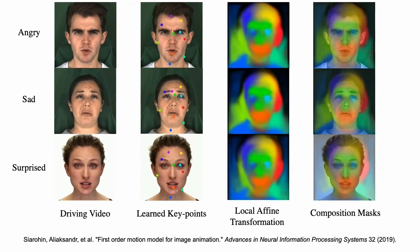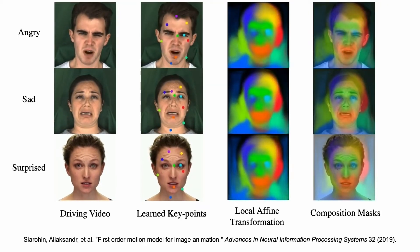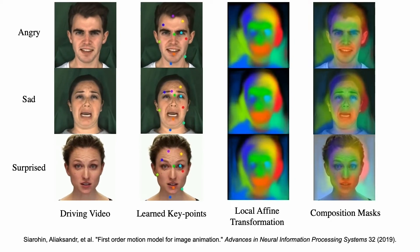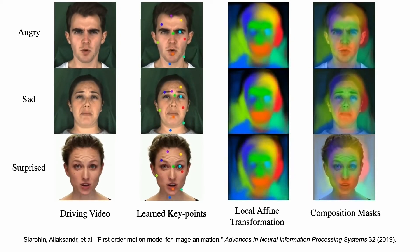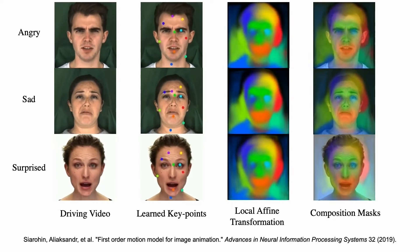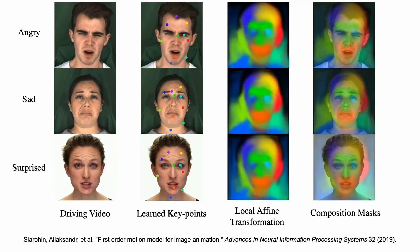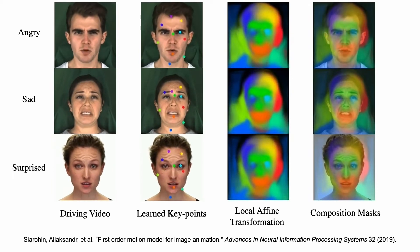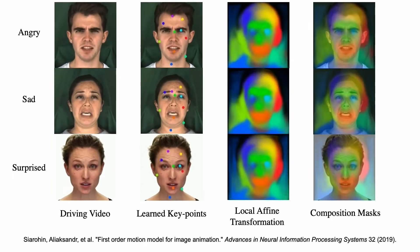The basis of our work is that self-learned first-order motion representations are capable of modeling local flow fields on faces, which is suitable for manipulating emotion deformations. All we have to do is to transfer the local emotional deformations to an audio-driven talking face with self-learned key points and local affine transformations.